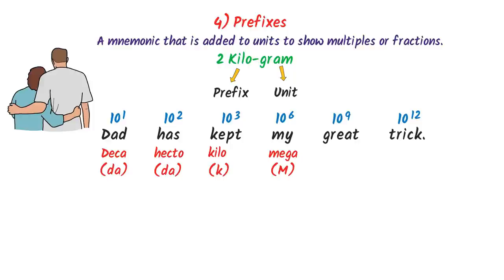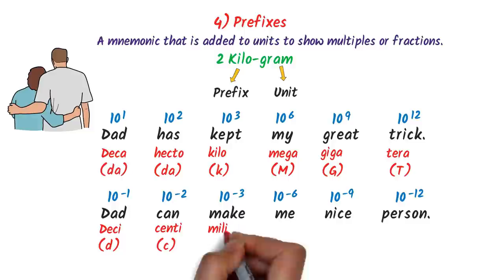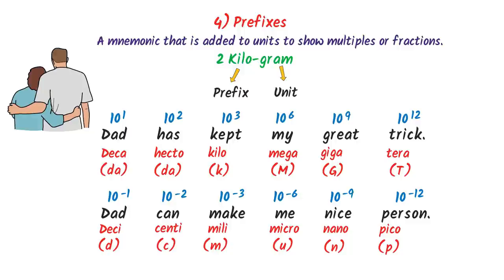For negative prefixes, I write 10 to the power negative 1, negative 2, negative 3, then jump by 3: negative 6, negative 9, negative 12. The trick is 'that can make me nice person': D for deci (10⁻¹), C for centi (10⁻²), M for milli (10⁻³), M for micro (10⁻⁶), N for nano (10⁻⁹), and P for pico (10⁻¹²). Using this trick, we can easily learn all the prefixes.